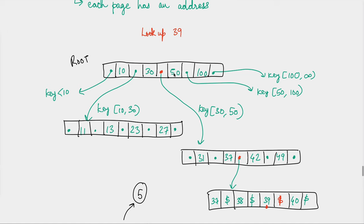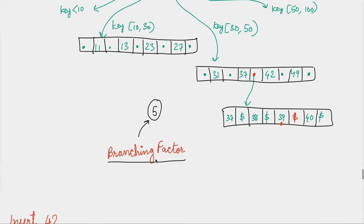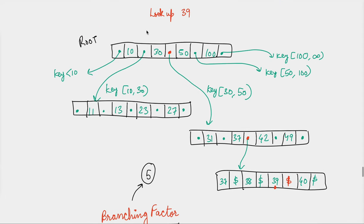Similarly, the pointer for 50 points to a page with keys greater than or equal to 30 and less than 50. For 100, there's a pointer to a page with keys greater than or equal to 100 with no upper bound. In this tree structure, one property is the branching factor — in this diagram there are five branches per node, so the branching factor is five, meaning four keys are stored per node.